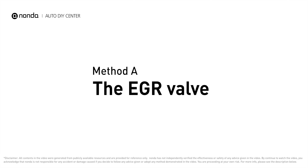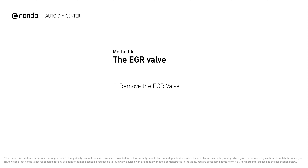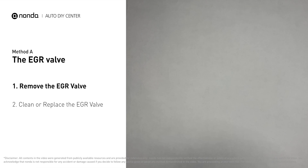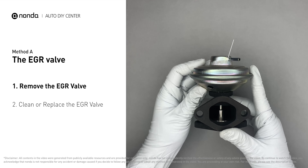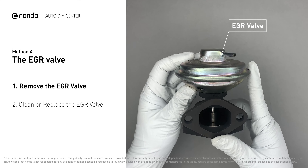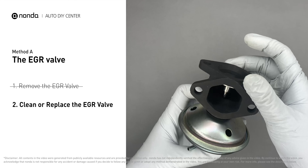Method A: the EGR valve. Looking at the engine from the front, the EGR valve is located towards the rear of the engine, just to the right side of the center. First, carefully remove the EGR valve from your car.